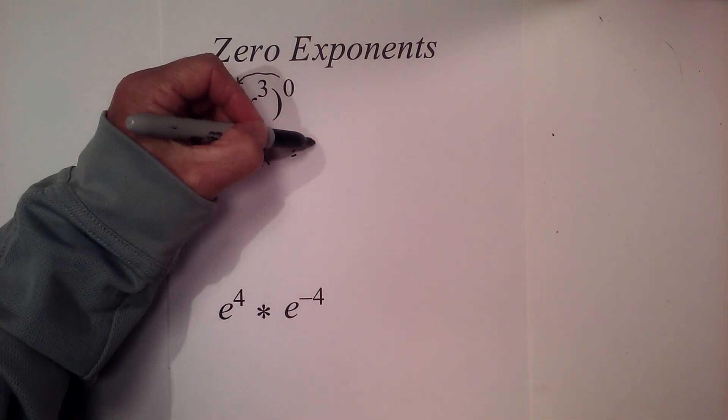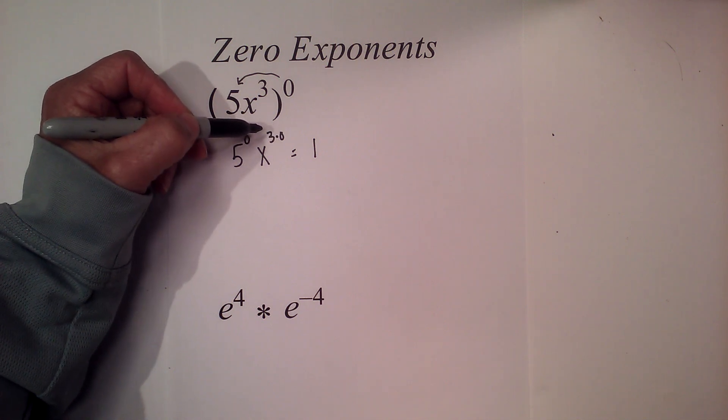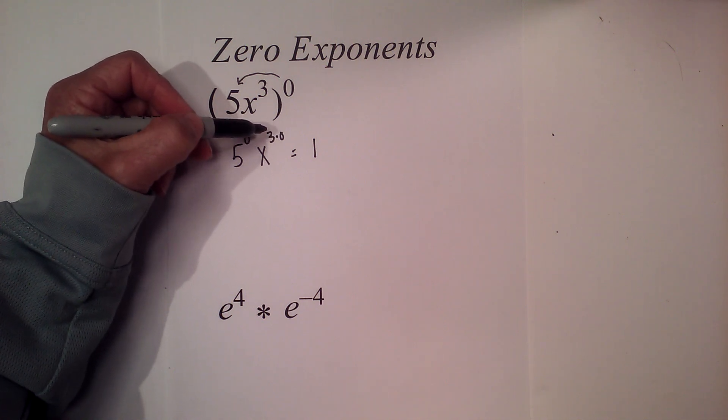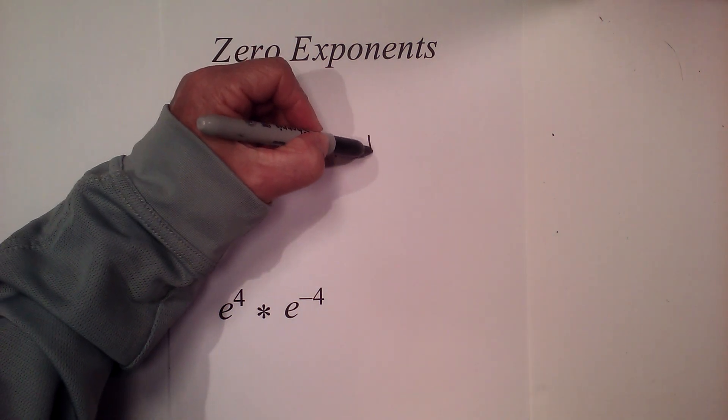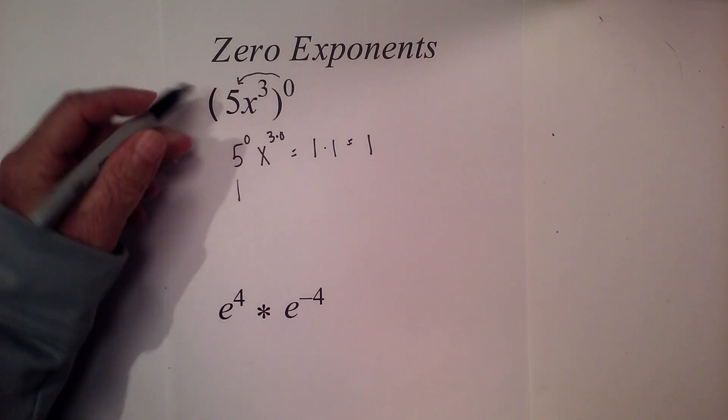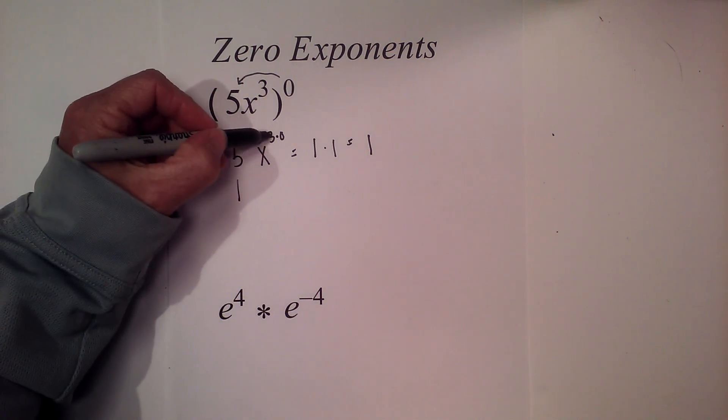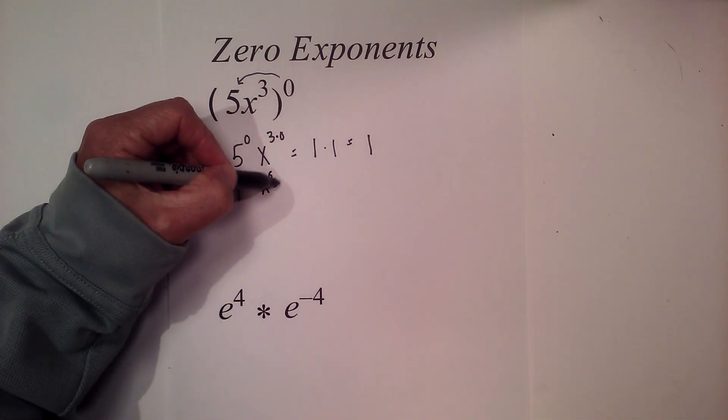Now that becomes 1, and then 3 times zero is 0, so that becomes 1, so it equals 1. And if you want to see this underneath, 5 raised to the zero power is 1, and then when you go 3 times zero, that equals x to the zero which is equal to 1. So you have 1 times 1 and it's 1.